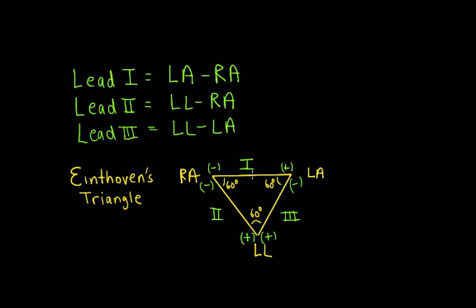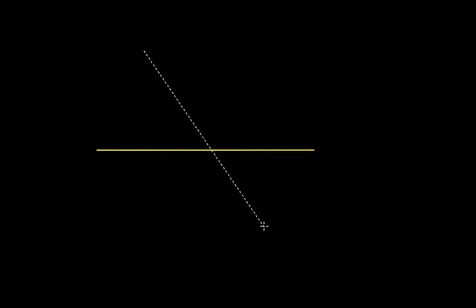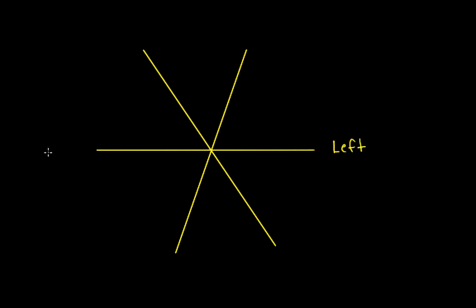We can redraw Einthoven's triangle by sliding lead 1 downward, lead 2 rightward, and lead 3 leftward. All the lines will then intersect at a common central point representing the center of the heart, giving us a triaxial diagram. We can label left, right, superior, and inferior on this diagram — and this defines the frontal plane axis.